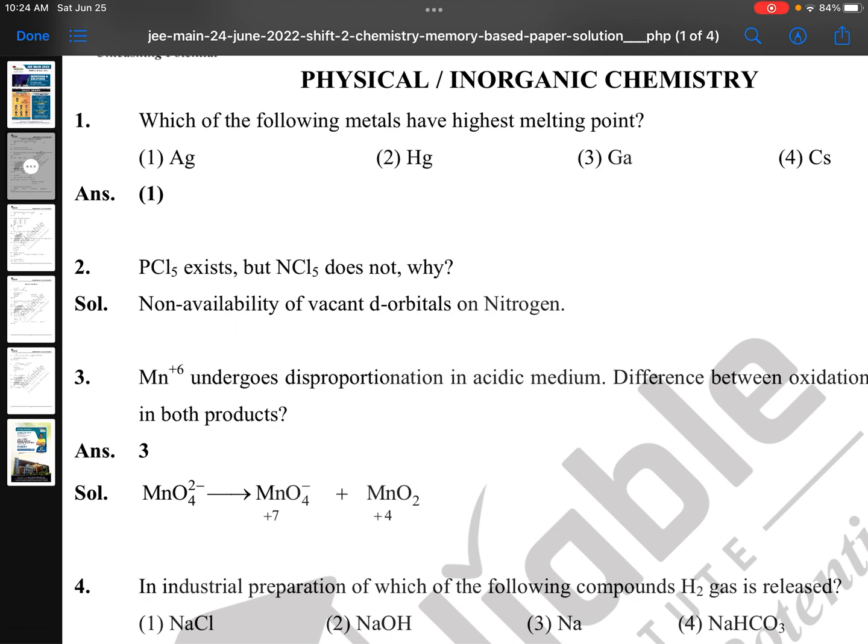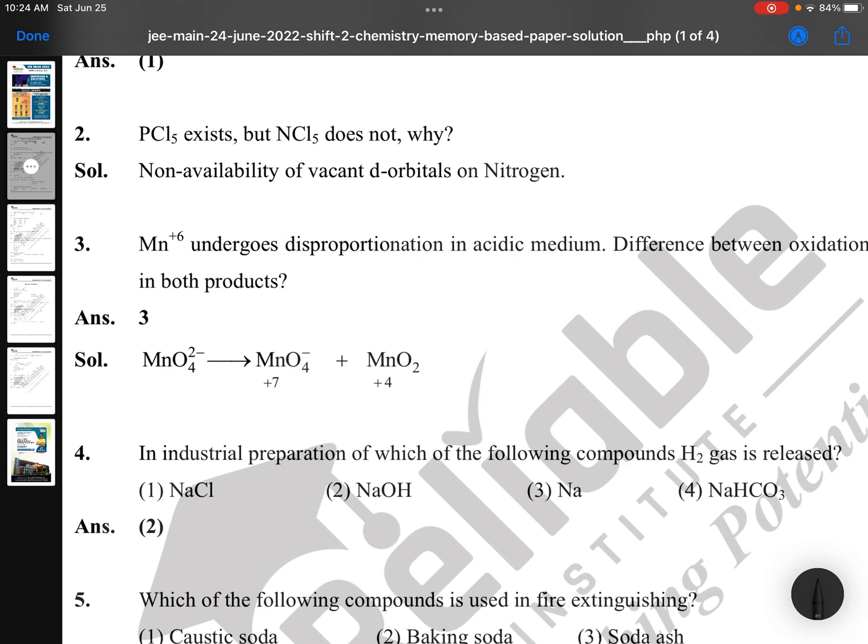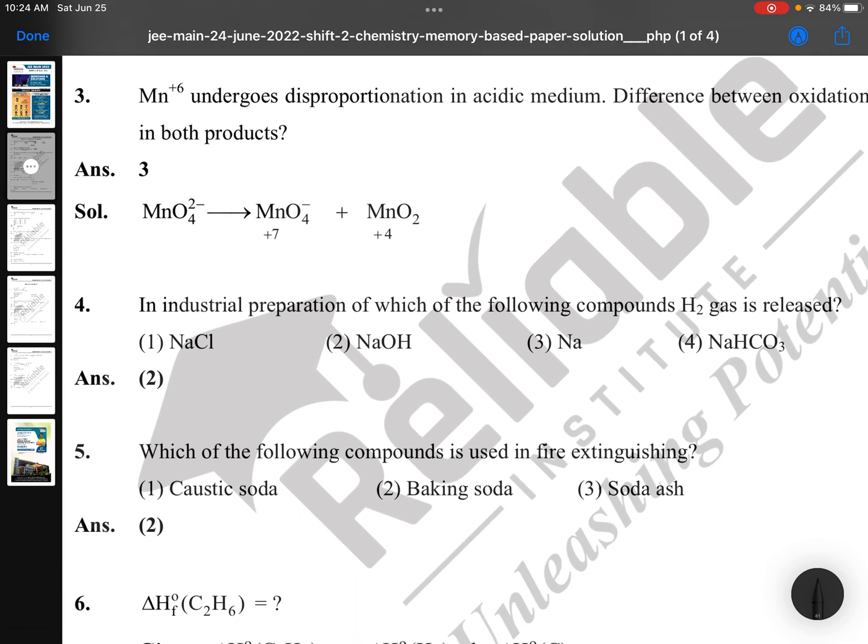Physical and inorganic chemistry questions. Which of the following metals have the highest melting point? You can notice mercury, gallium, and cesium are liquids at room temperature, so the highest melting point will be silver. Very easy question. PCl5 exists but NCl5 does not. This is a board-level question, again very simple, due to non-availability of vacant d-orbitals on nitrogen.